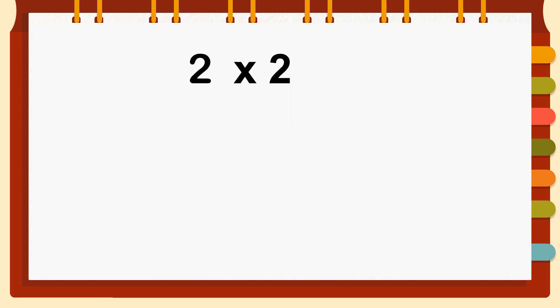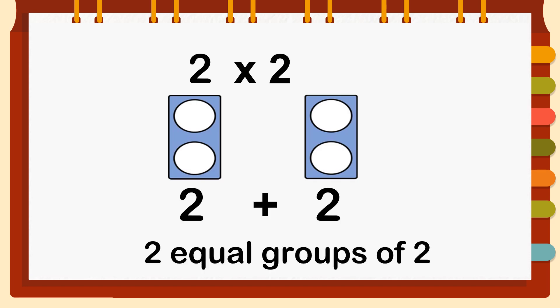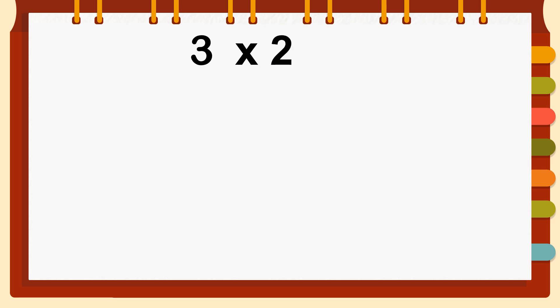Now let's practice multiplication by two. Here we have two times two. We can use pictorials or images to represent the numbers — here we have two equal groups of two. Two plus two. Adding repeatedly we have the number four, so two plus two equals four. Remember, multiplication means adding a number repeatedly. Two times two equals four.